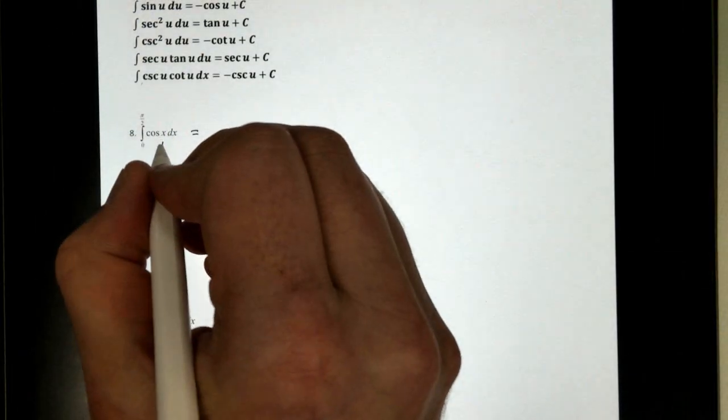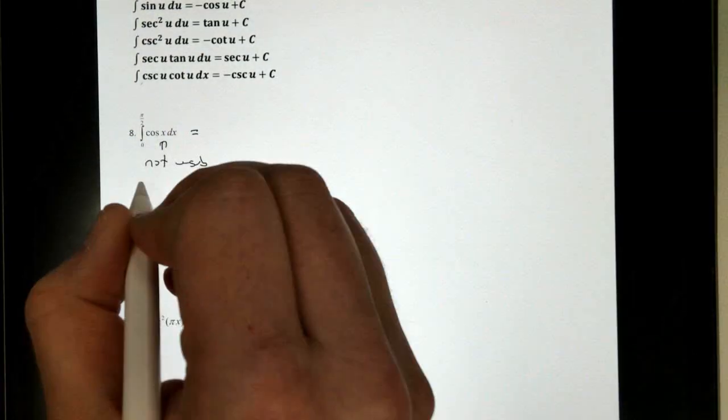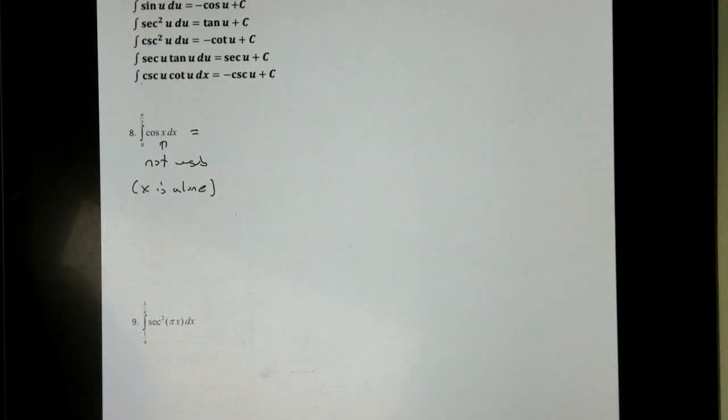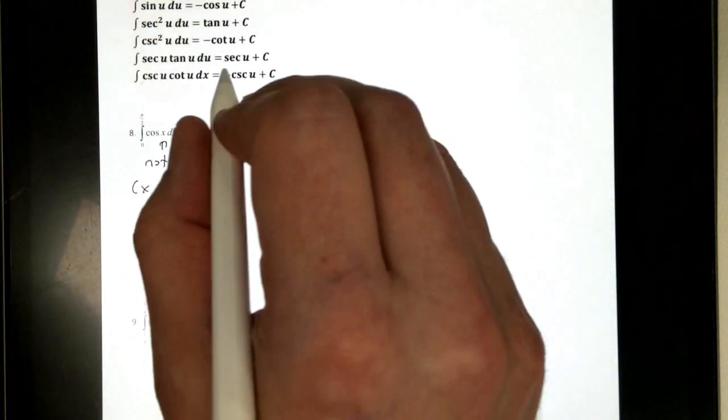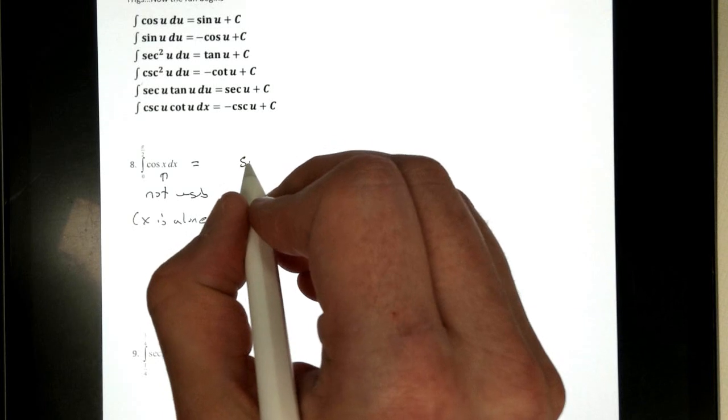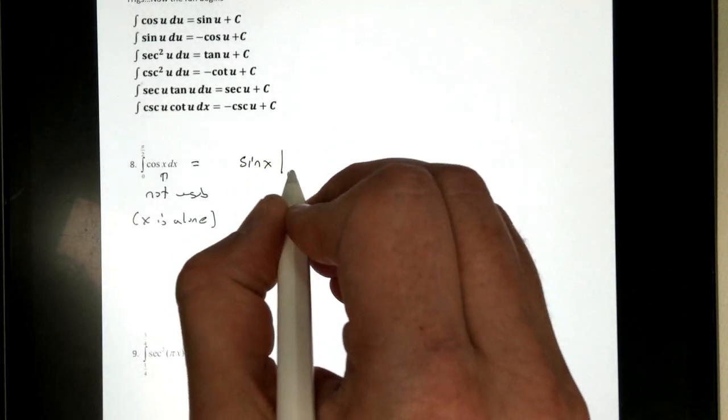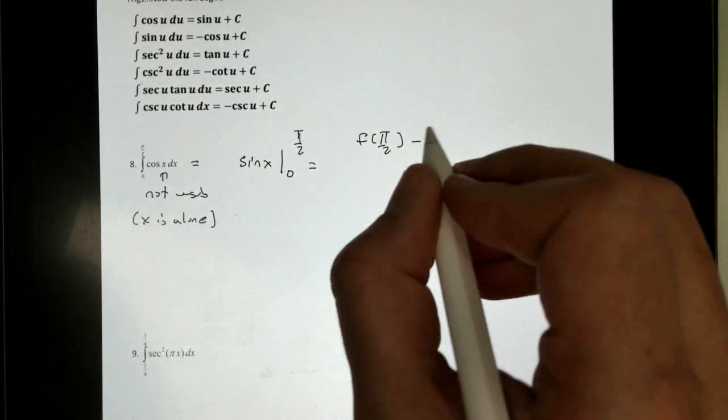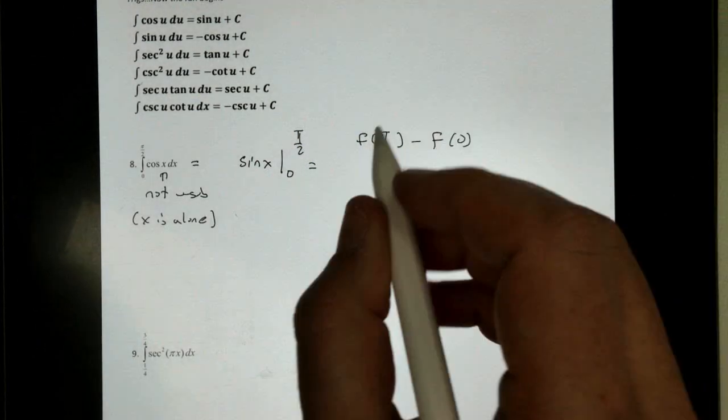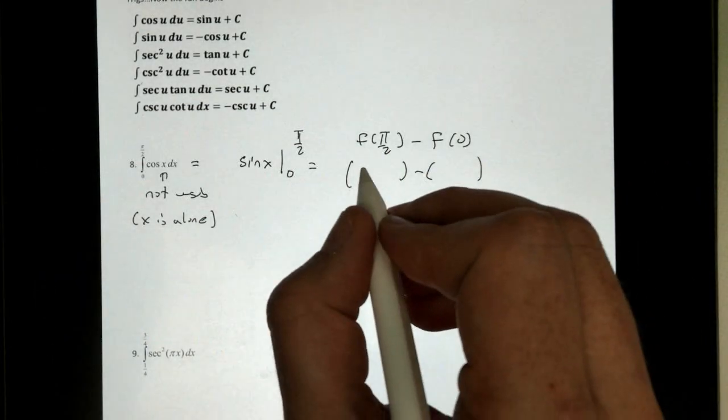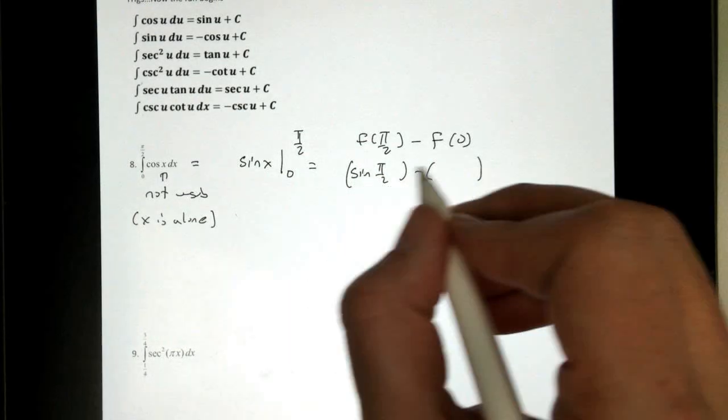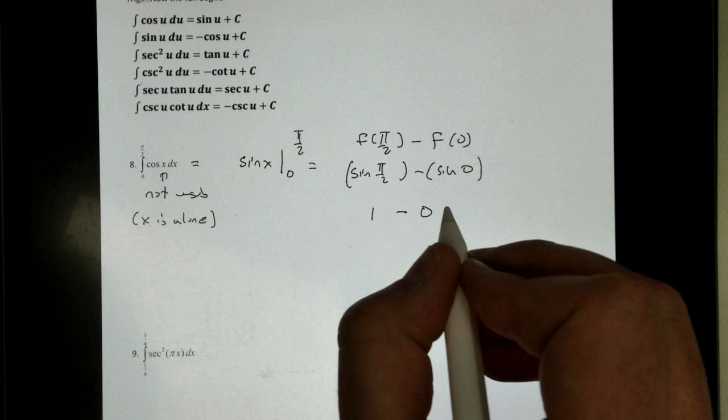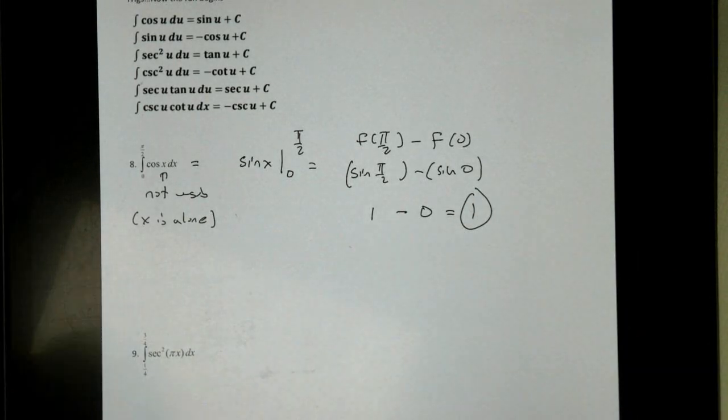And the reason it's not u substitution is x is alone. x is inside of the cosine, but it is alone. So the antiderivative of cosine is sine. So this just becomes the sine of x. And we evaluate that from 0 to pi over 2. Applying the fundamental theorem, this is called the FTC right here. And again, we're going to get sine of pi over 2 minus sine of 0. Don't leave it. Sine of pi over 2 is 1. Sine of 0 is 0. So we just get 1. Easy peasy.